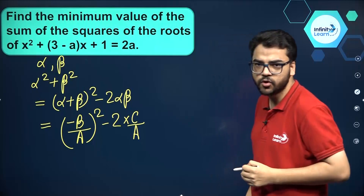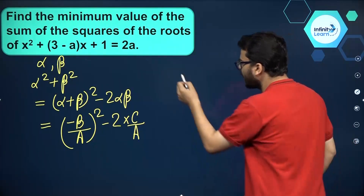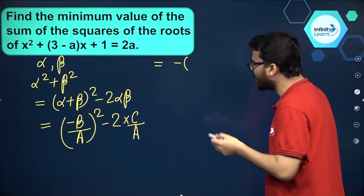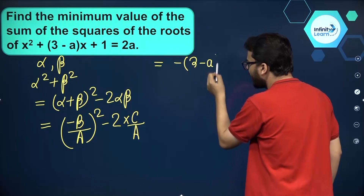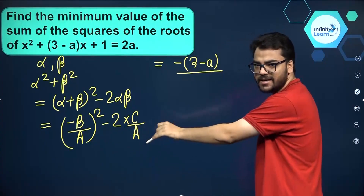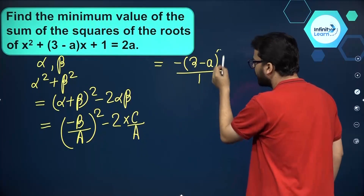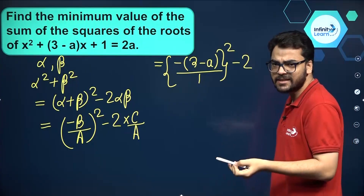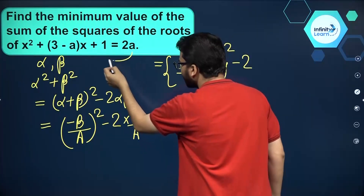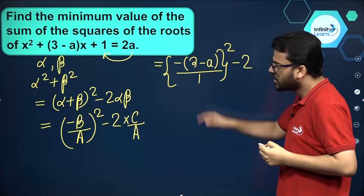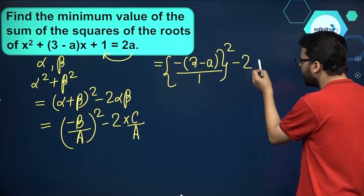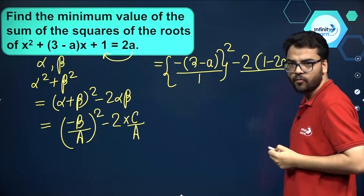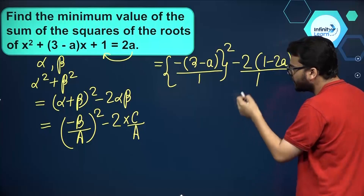Let us put the values. Minus b by a — b is the coefficient of x, which is 3 minus a. So that becomes minus of (3 minus a) divided by 1 (the coefficient of x square), the whole square. Then minus 2 into c by a — c is the constant term, which is 1 minus 2a, and a is 1. So we get (3 minus a) the whole square minus 2(1 minus 2a).